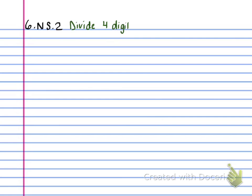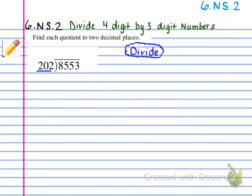The first thing you're going to want to do is head your paper with 6.NS.2 — divide four-digit by three-digit numbers — and write 6.NS.2 in the top right corner. Then write the first problem: 8,553 divided by 202. Once you've done that, you'll want to write the steps for this division problem. I'm going to go through one full problem, then have you do one where I show you the answer, and then you'll have your problem of the day.